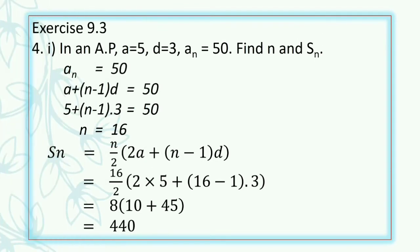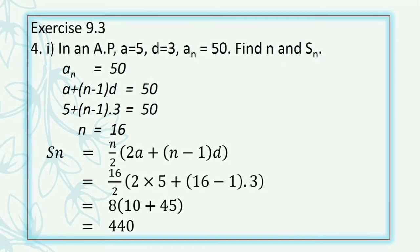Now question number 4, first part. In an AP, A = 5, D = 3, AN = 50. Find n and Sn. The nth term is given as 50. Applying the formula A + (n−1)D = 50, substituting A = 5 and D = 3, we get 5 + (n−1)×3 = 50, which gives n = 16. Now substituting n = 16, A = 5, and D = 3 into Sn = (n/2)[2A + (n−1)D], we get Sn = 440. So n = 16 and Sn = 440.